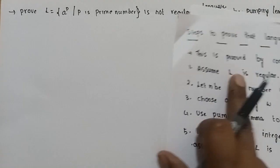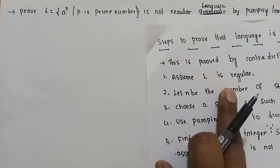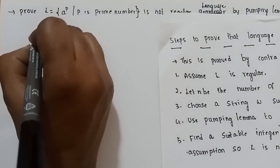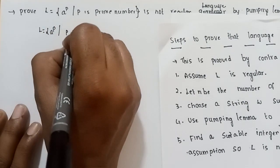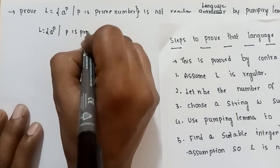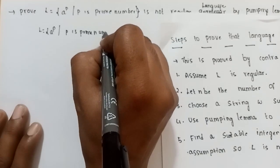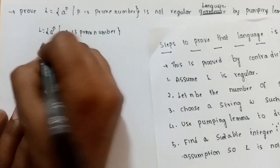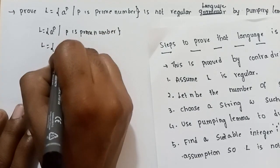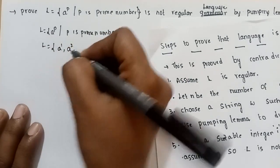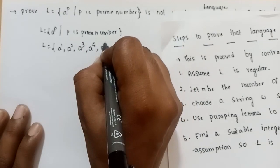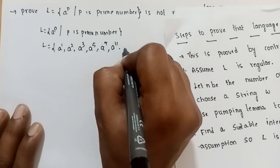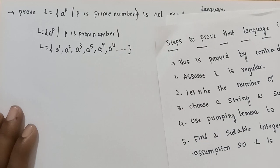The first step is to assume that L is regular. So this language is equal to a power p where p is a prime number. So this language contains a power 1, a power 2, a power 3, a power 5, a power 7, a power 11, and so on. These are the types of strings in this language.